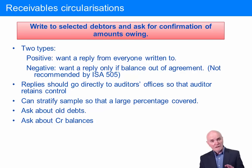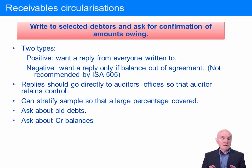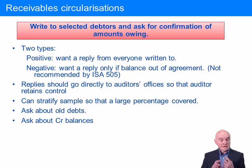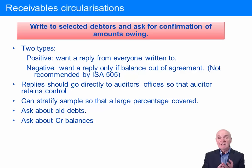Receivables circularization is universal and fantastically important — it's very, very good evidence. It's third-party evidence, coming from the client's customers. It is written evidence. It is directly received by the auditor. It's got a lot going for it.